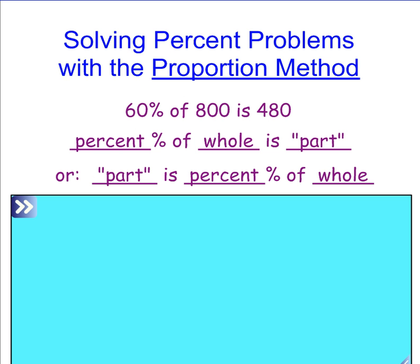The first method I'm going to show you for solving percent problems is the proportion method. In the last slide we saw that 60% of 800 is 480. The percent we're going to refer to as the percent. The number we're taking a percent of we're going to refer to as the whole. And the other part, sometimes called the is part, we're going to call the part. It may be written this way or it might be written as part is a percent of the whole.